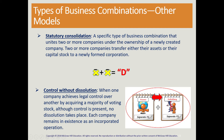Then we could have control without dissolution, where the parent and the subsidiary continue to exist as separate entities. They conduct business and might have intra-entity transactions, but at the end of the day, they have not dissolved as entities. So every time we are going to issue financial statements, we have to consolidate them.